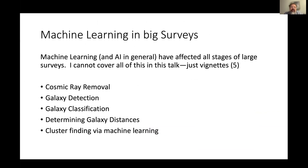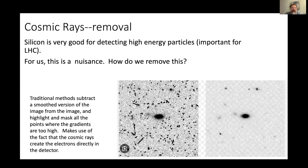My emphasis will be on machine learning in big surveys. My plan is to talk about five vignettes. The first has nothing to do with galaxies but is an area where machine learning has already completely taken over — all the algorithms employed are now ML algorithms. Then we'll talk about galaxy detection, classification, and determining galaxy distances, which will be the topic of the workshop. We'll do a simplified version of galaxy distance measurement, and then talk about some cosmological applications such as cosmic ray removal.